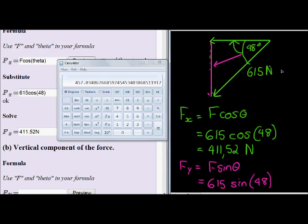It's equal to 615 times 48 sin is equal to 457.03. And that is the portion that will be going in the vertical direction.